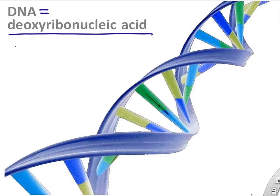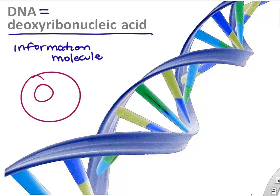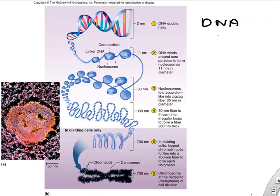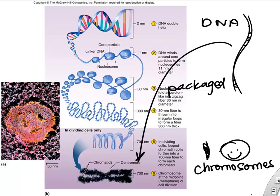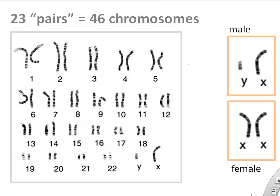DNA is deoxyribonucleic acid. It's an information molecule that we talked about, and it's contained in the nucleus of our cells. DNA is packaged up — since there's so much of it, so long and so much information, it's packaged and organized into chromosomes. And we'll talk a little bit more about chromosomes.